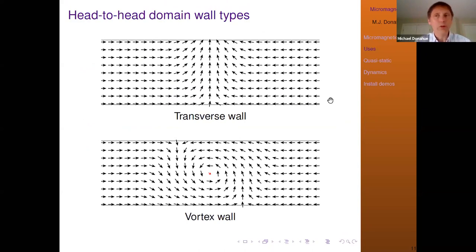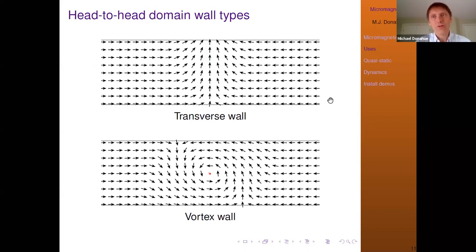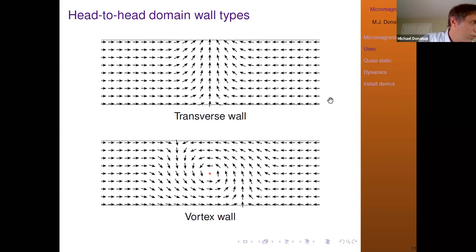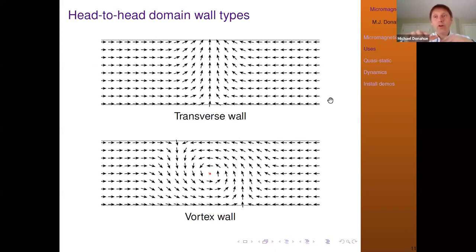A question about units: OOMPH is strictly SI. We're the National Institute of Standards — that's our system. So sometimes you have to convert from Gaussian units into SI. Another question: is it possible to model an ensemble of nanoparticles? Yes, you can have a collection of particles with space in between them. One of the projects I'm working on right now actually involves nanoparticles.